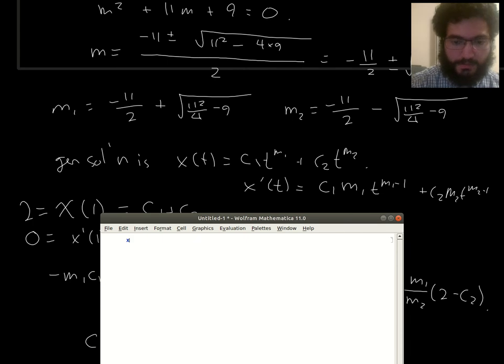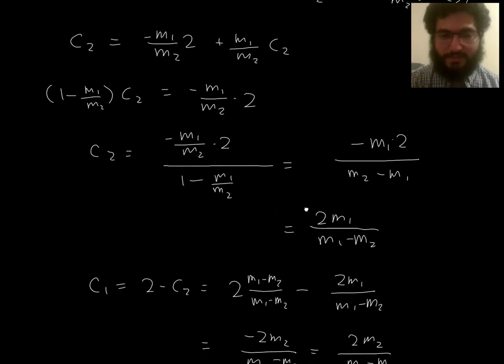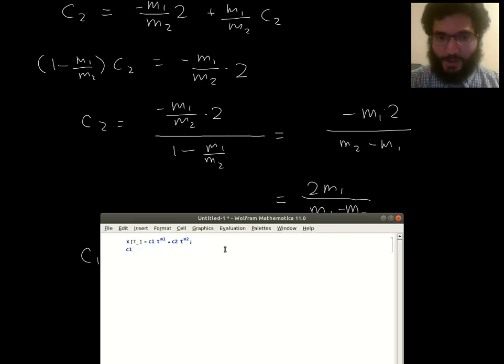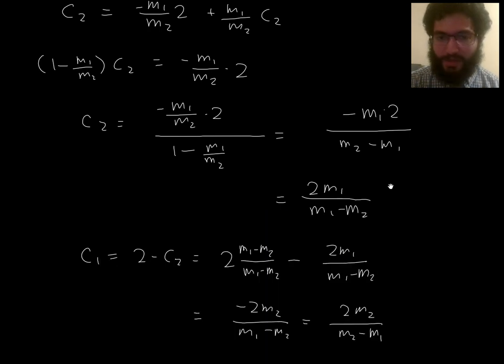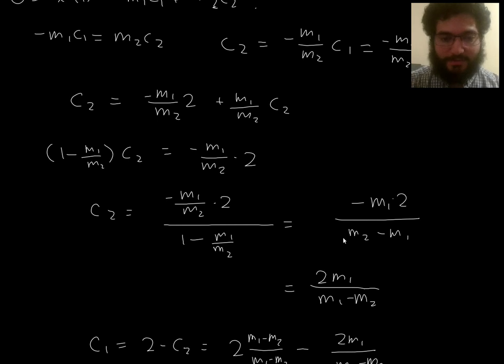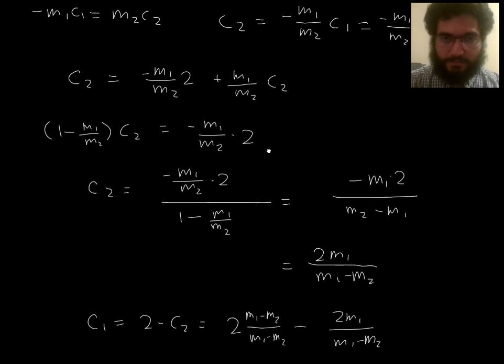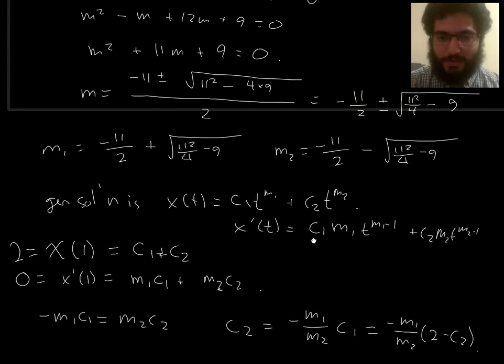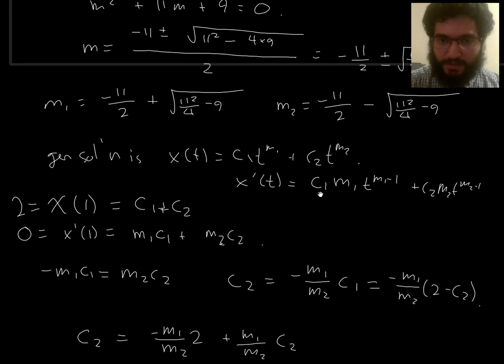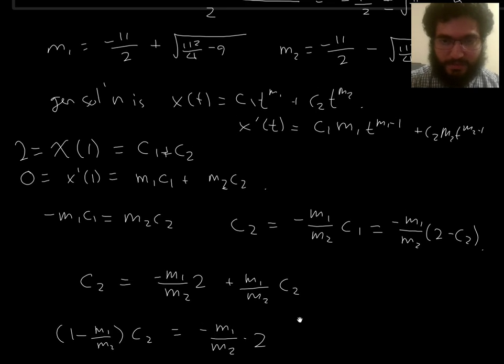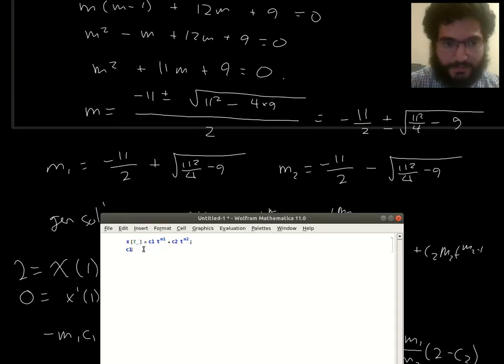Okay. So let me start by just typing this in. x of t, c1, t to the m1, plus c2, t to the m2. And then I can say what are c1 and c2. So even if you do the algebra like I just did, like a peasant, it's still helpful to go to Mathematica and just check that you got the right thing. Like, I have no idea right now. I could have made a mistake in any place. So there's a saying that you should never compute anything unless you already know what is the answer. I'm trying to find... I need to fill in what are m1 and m2. So let's say what these are, and then also fill in what are c1 and c2.